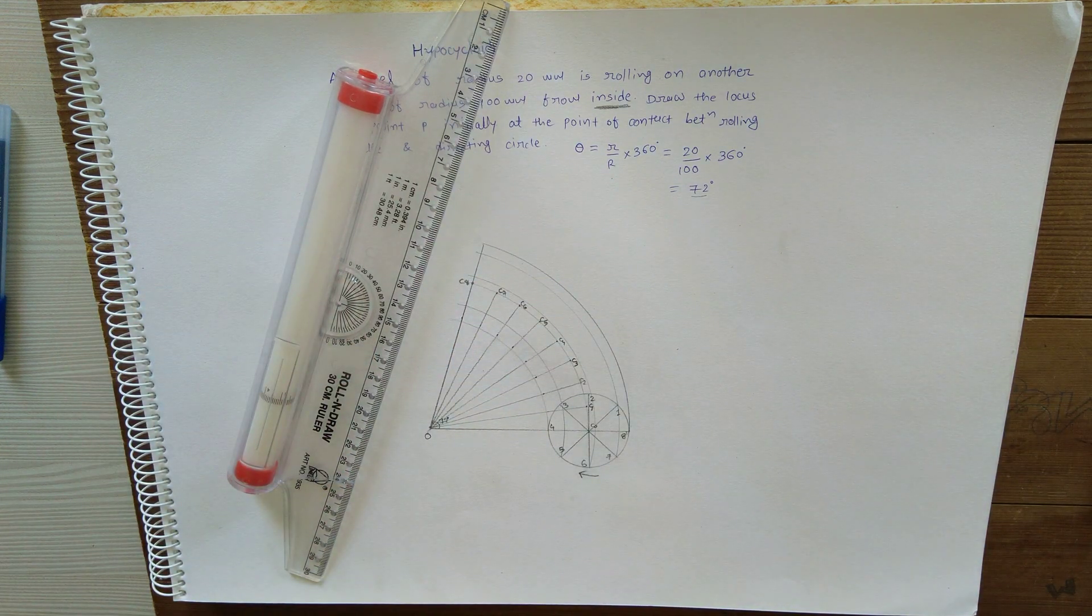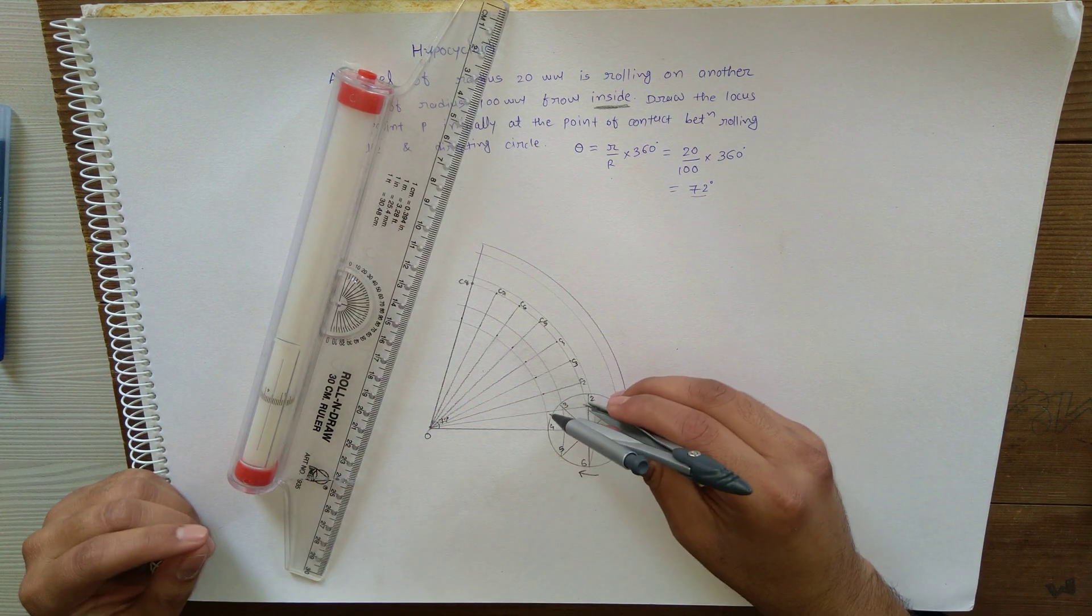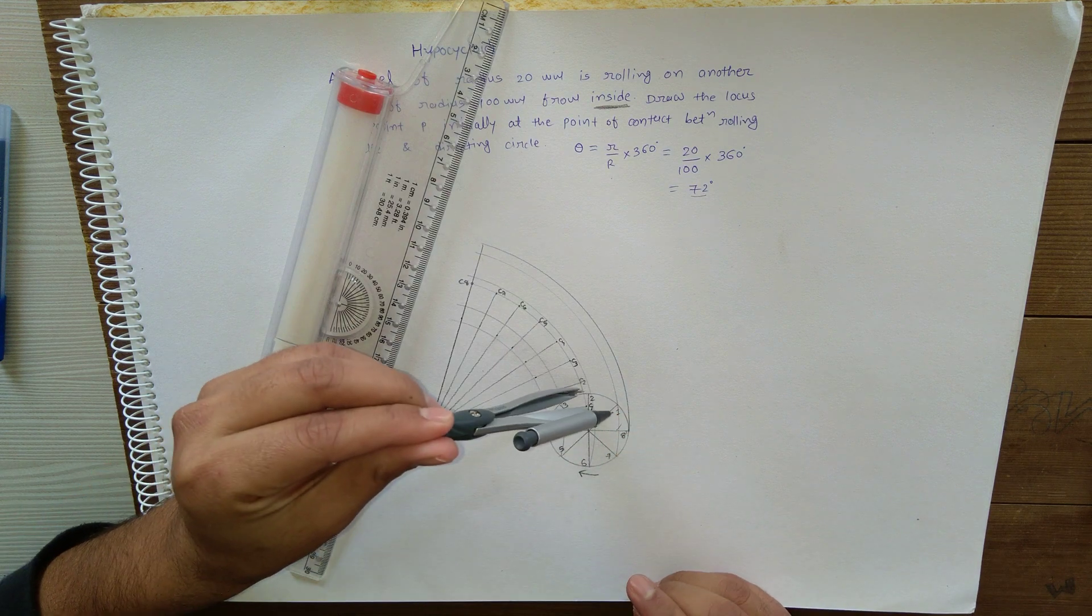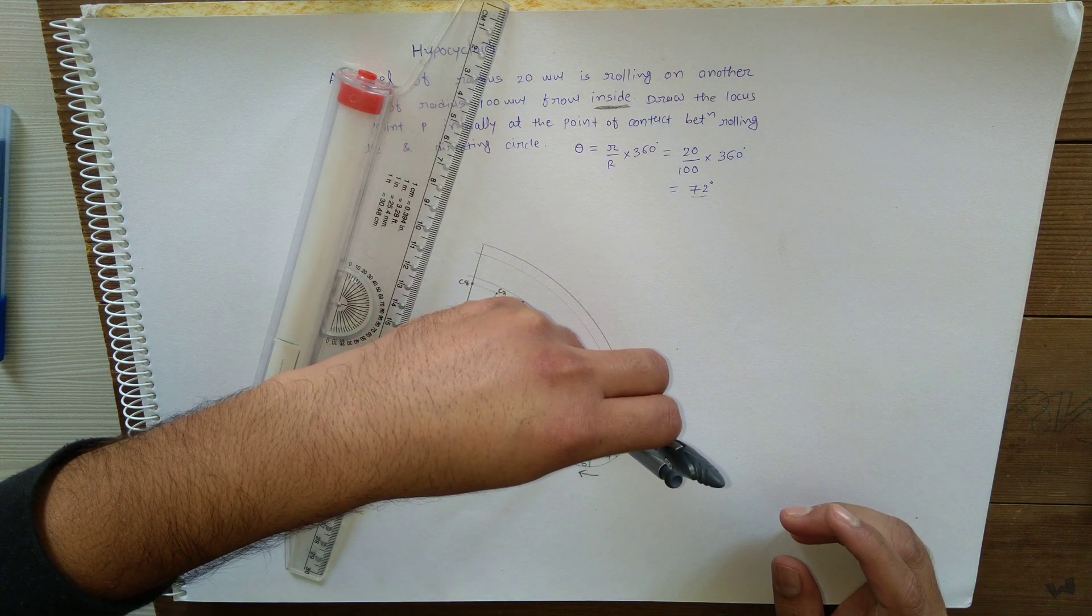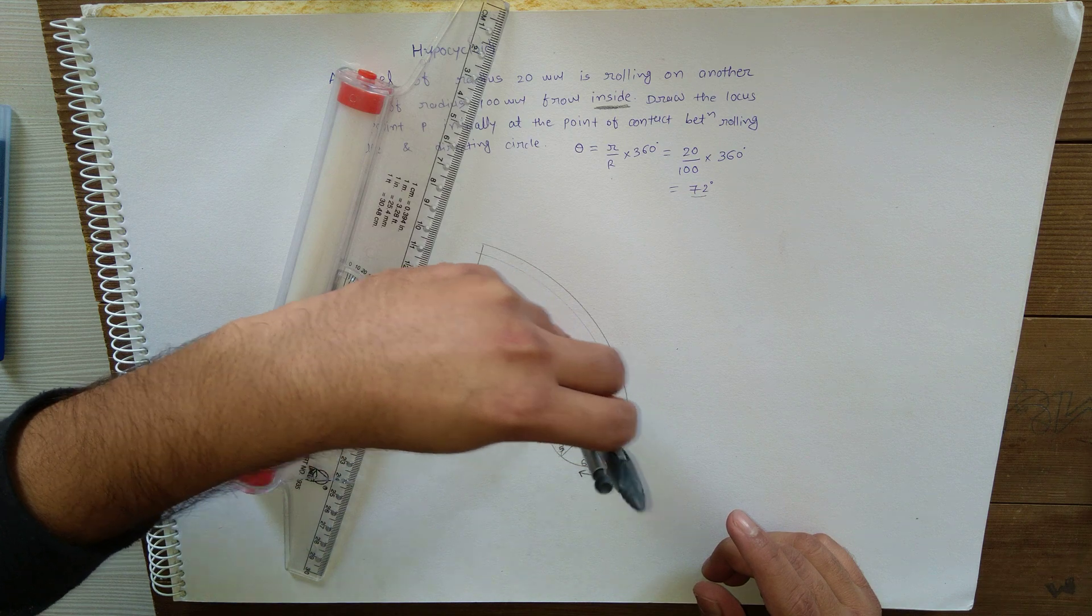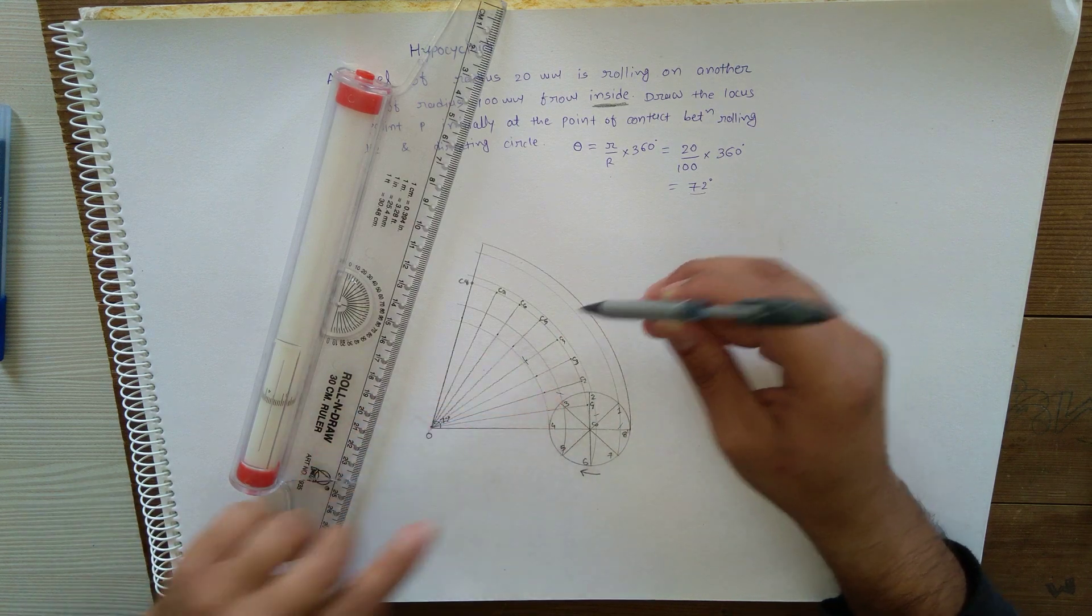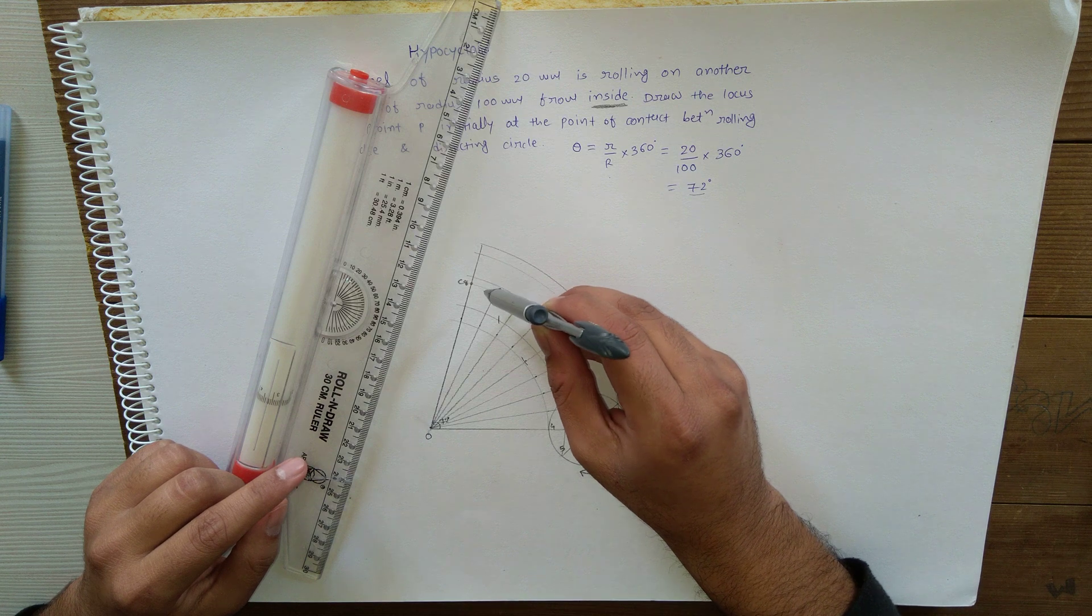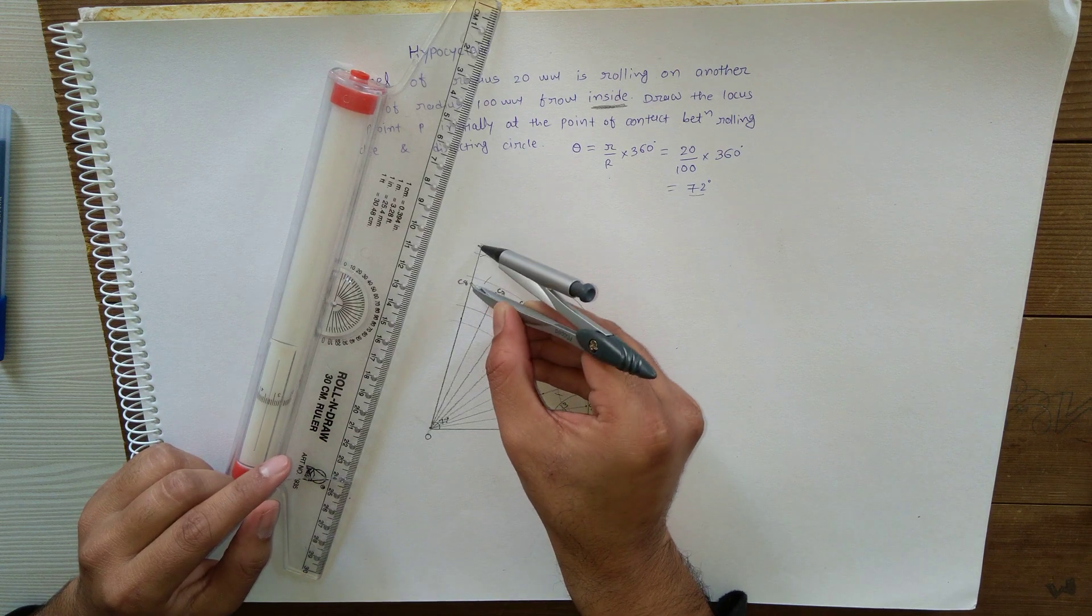Now the last step is to take the radius of this circle, and with center C1 draw arc or cut the arc on the arc of 1. With center C2, without changing radius, cut arc on the arc of 2, then arc of 3, then 4 will be definitely tangential. Arc of 5, that is 3 and 5 share a common arc, arc of 6, arc of 7, and 8 will definitely be tangential to this arc.